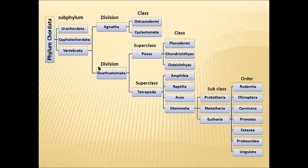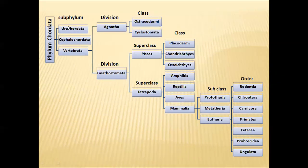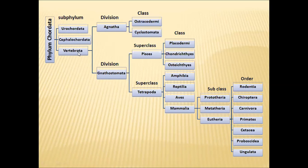Before entering into the topic, let us have a look at this slide, which we have already discussed in previous lectures. This is a classification of phylum Chordata. The phylum Chordata is classified into two groups: Acraniata, which comprises the subphyla Urochordata and Cephalochordata, and another subphylum Vertebrata or Craniata. Within Vertebrata, it is classified into two divisions: Agnatha and Gnathostomata.